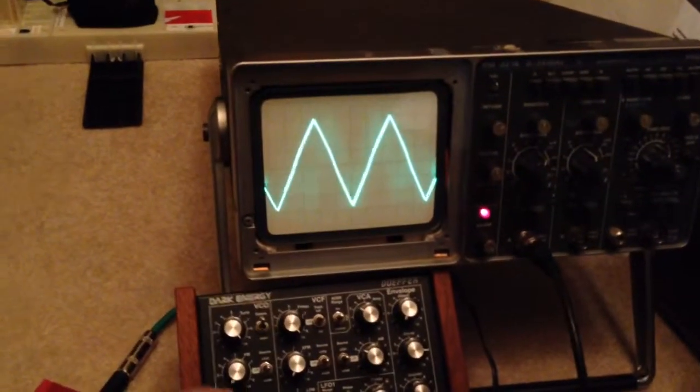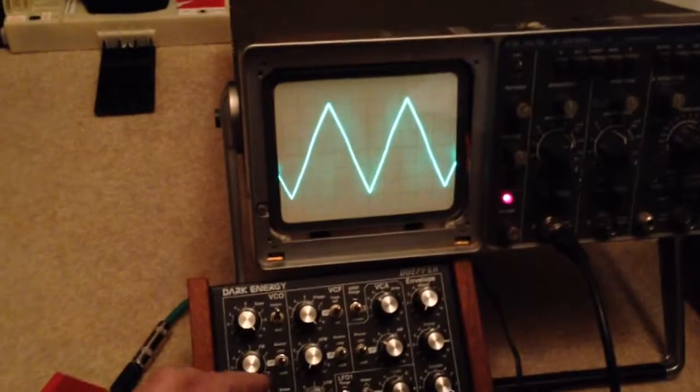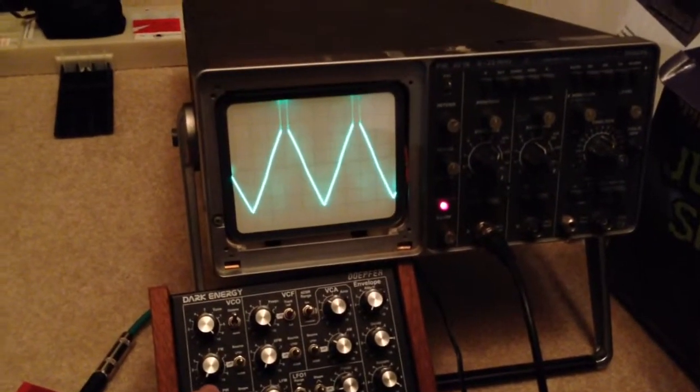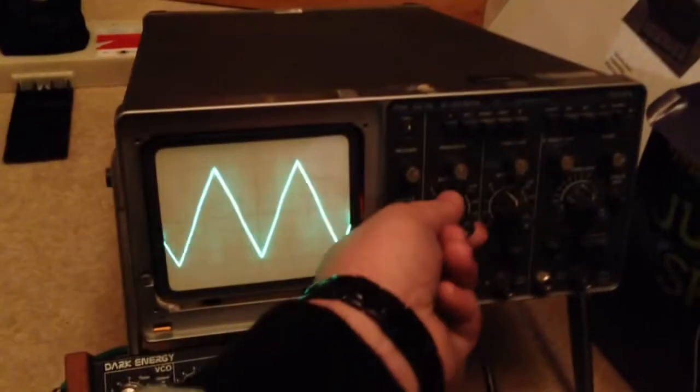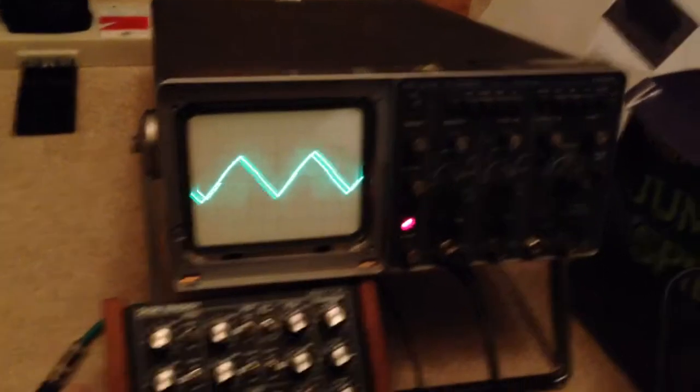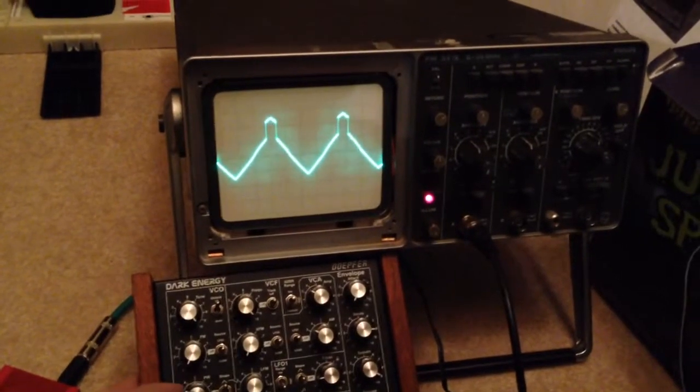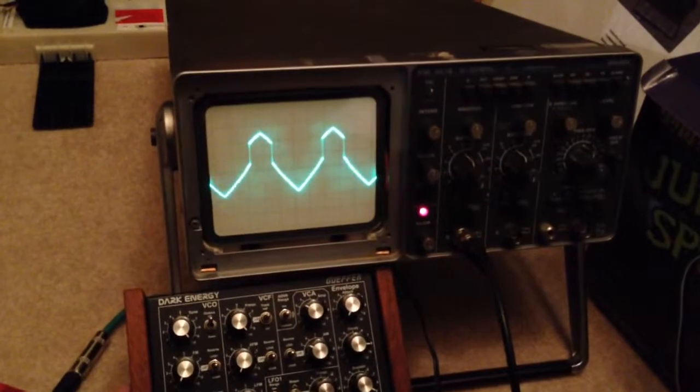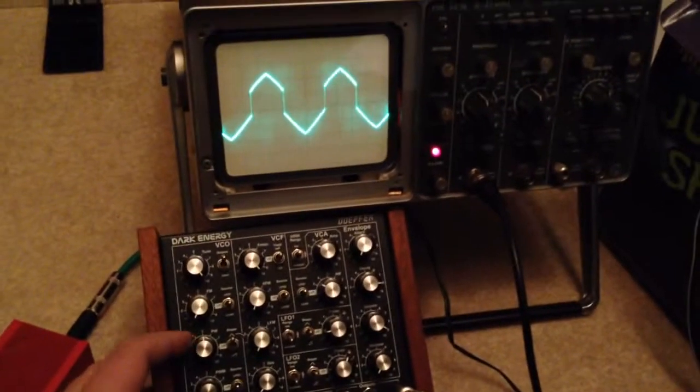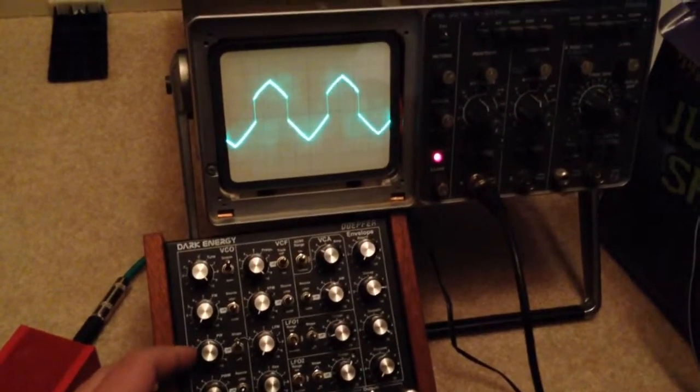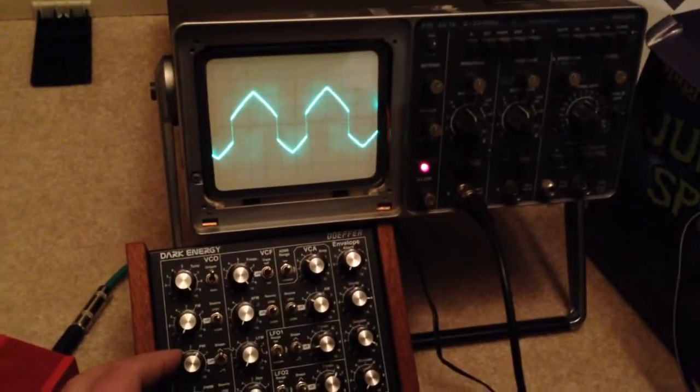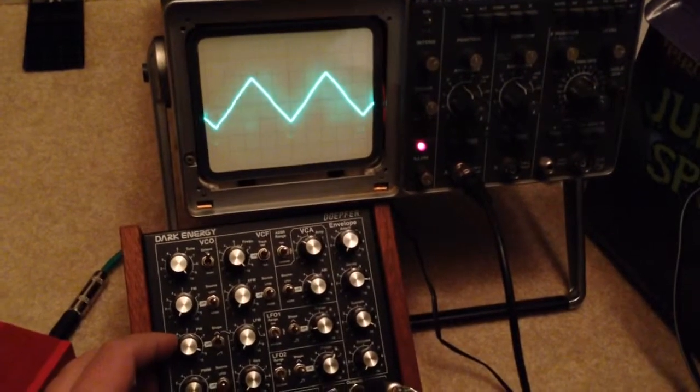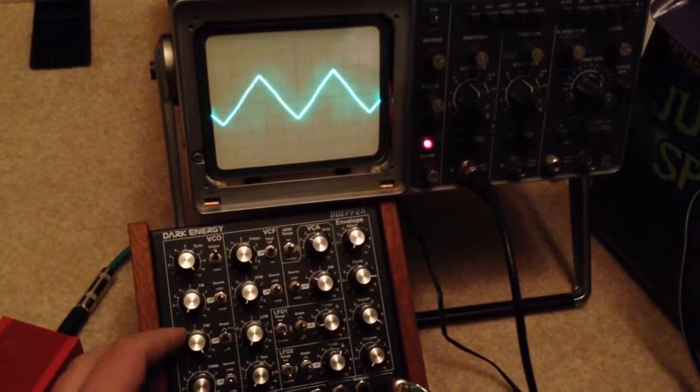So, as I turn this pulse width up, you're going to see the superimposed pulse width, but with triangles. Actually, let me, here we go. So, that's at 3, that's at 4, we have a nice little church steeple. So, 5, 6, 7, 8, 9, and 10.